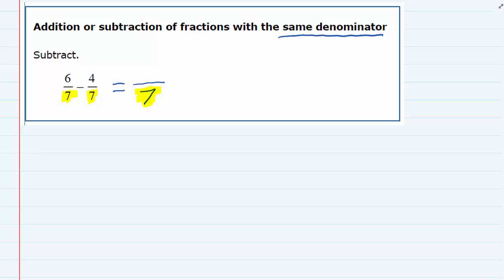So all we have to do is figure out what to do with the tops. And since this is a subtraction problem, we have in the top a 6 minus a 4, we just subtract the tops. 6 minus 4 gives us 2.